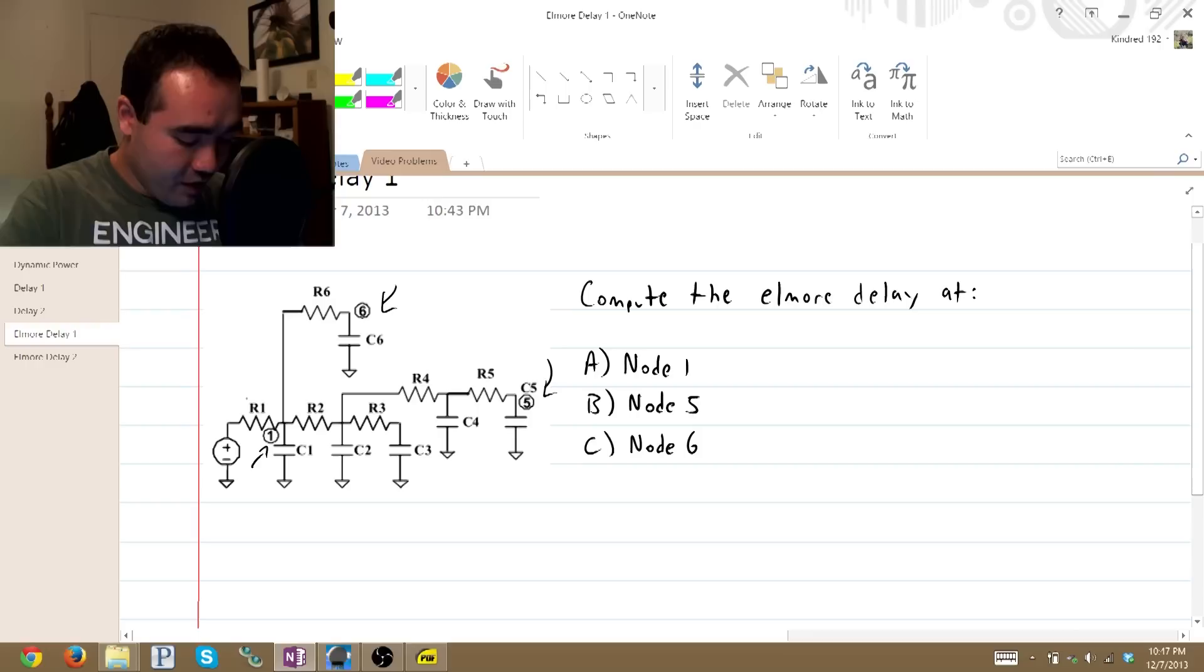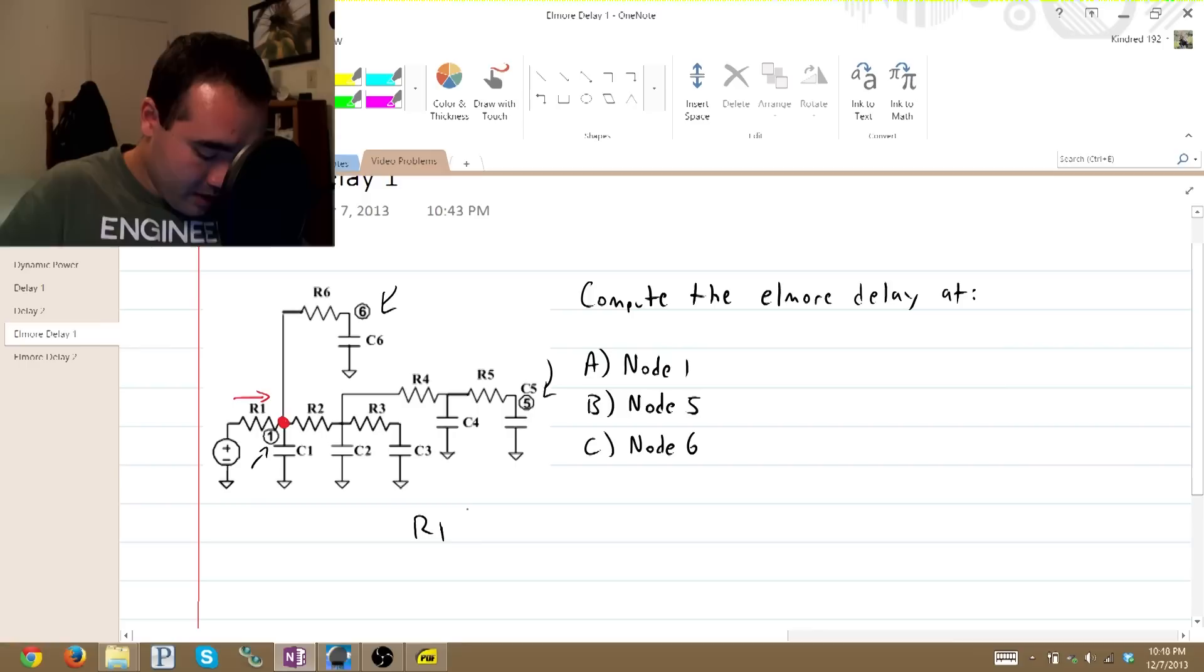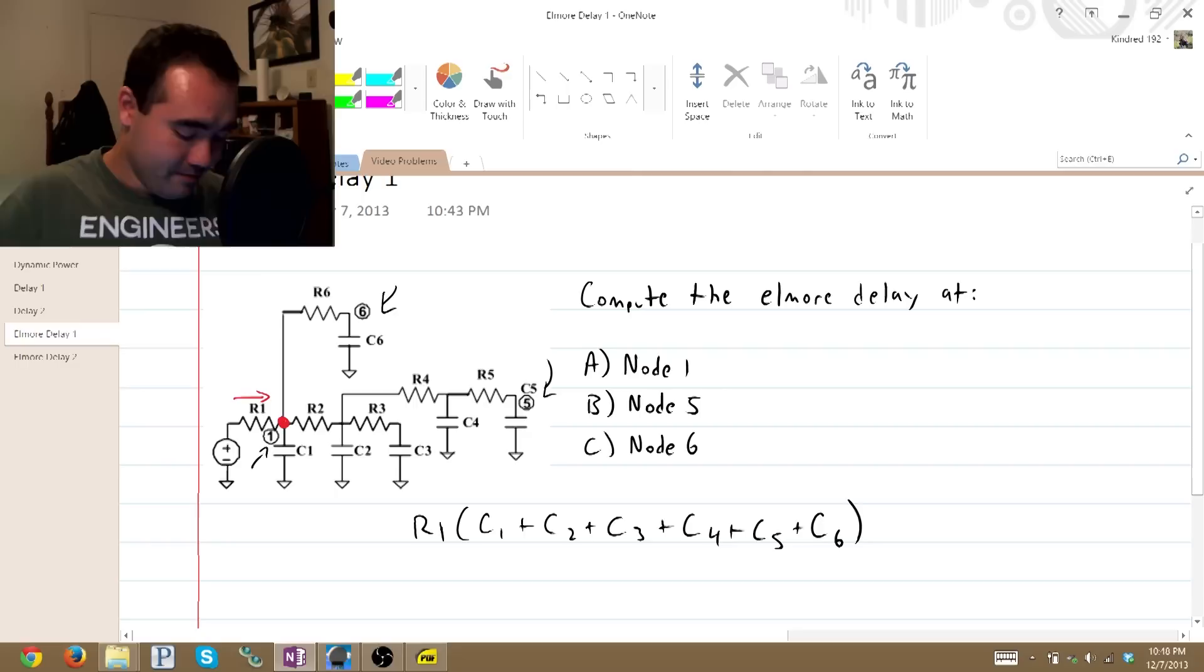Node 1. All we have to do is take a look at the resistance across this resistor, and the capacitances that are downstream from that node. So all I'm going to do is write R1 times C1 plus C2 plus C3, C4 plus C5, and C6.